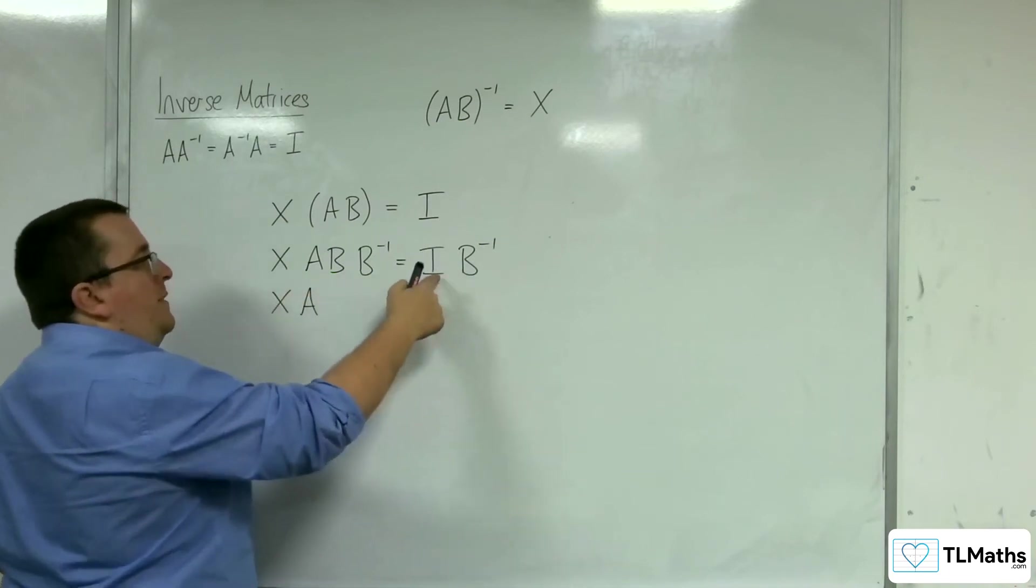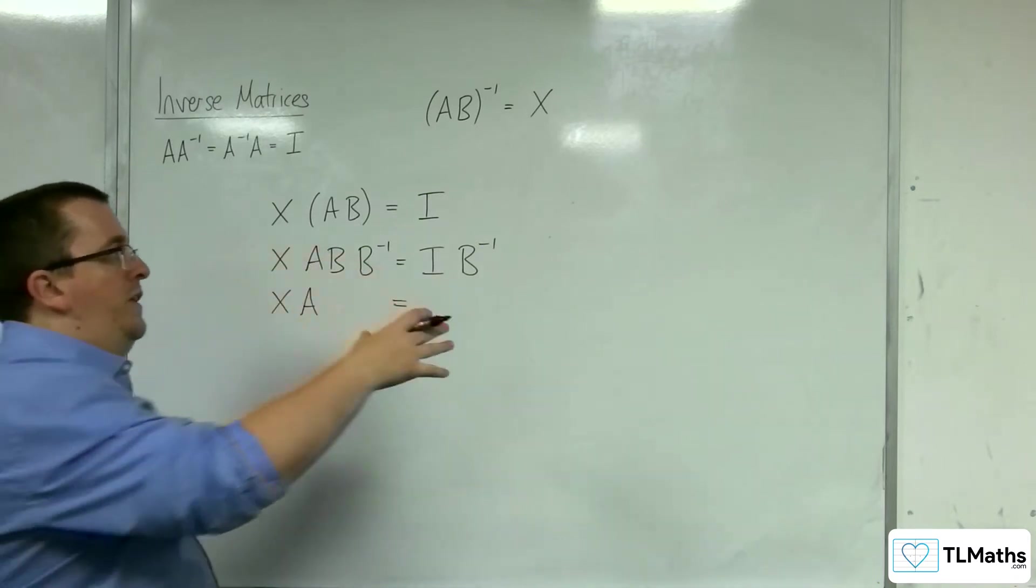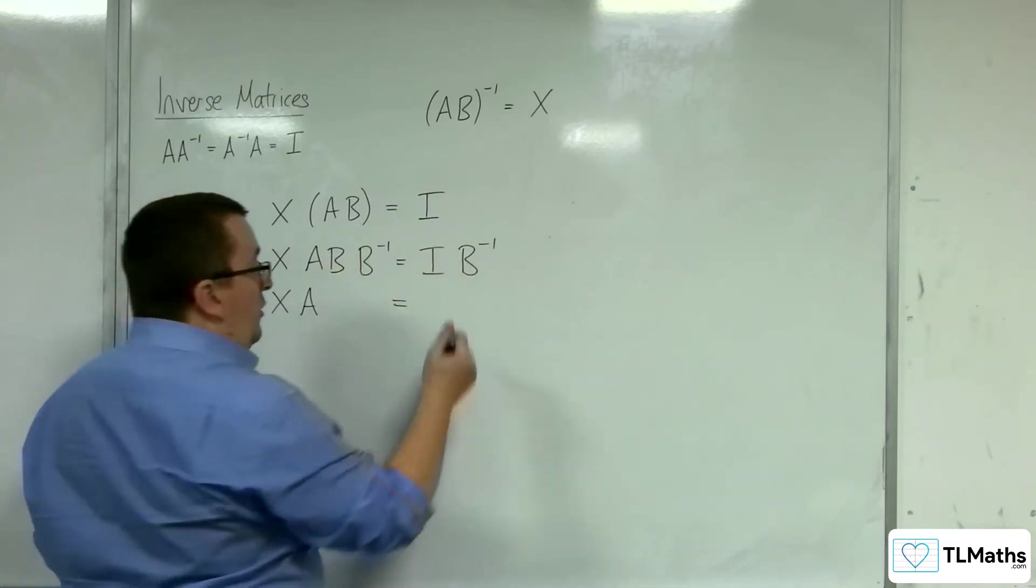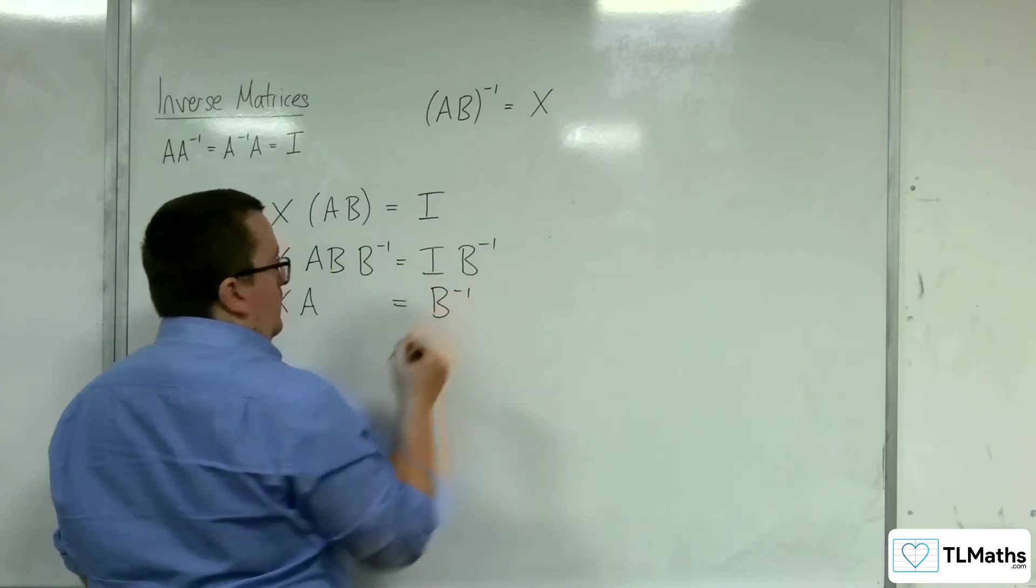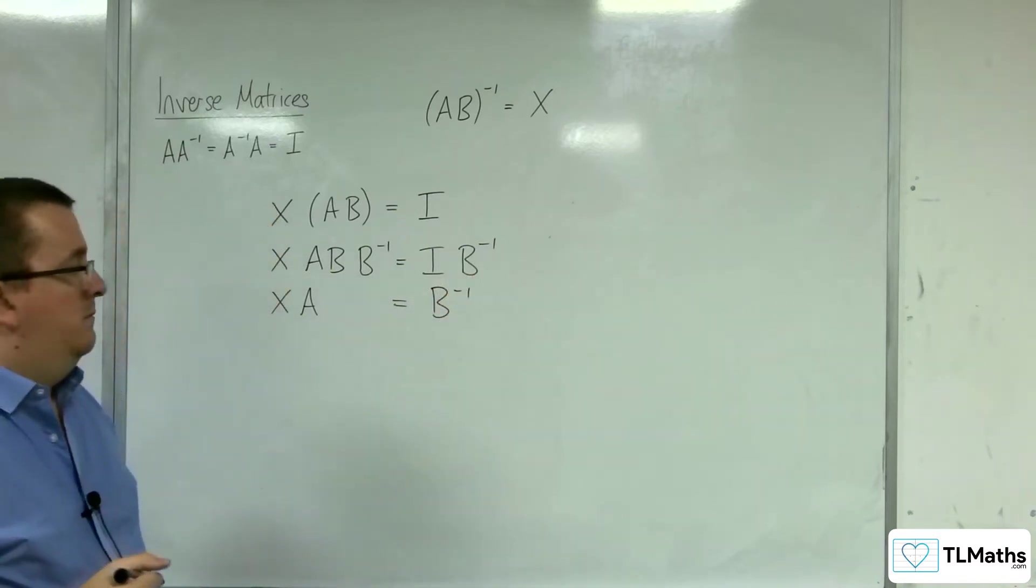If I apply the identity matrix with the inverse matrix of B, that will just be B^(-1), the inverse matrix of B.